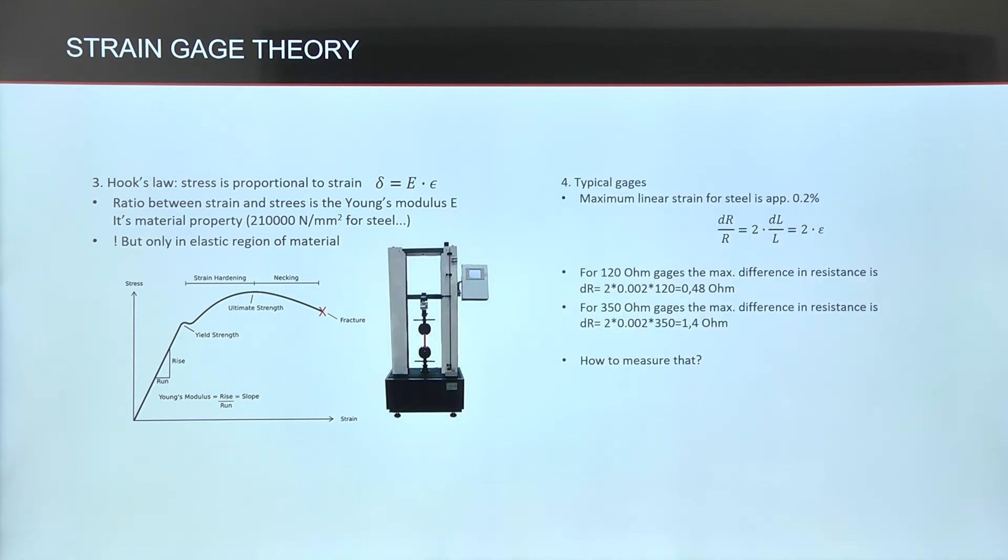Usually we get very small changes in the resistance from the strain gauge, which is applied on the surface of material where we perform measurements. To measure these small changes, we use a Wheatstone bridge circuit and precise instrumentation amplifiers.